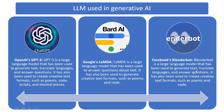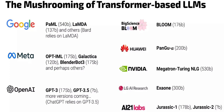Facebook also has its own LLM model called BlenderBot. BlenderBot is used to generate textual data, handle language translation, and question answering. Other big companies using LLMs include Google with its PaLM model using 540 billion parameters, and LaMDA with 135 billion parameters.